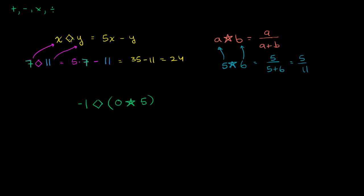We haven't defined whether diamond takes precedence over star or vice versa, the way we say you do multiplication before addition. We haven't defined it for those operations, but that's what the parentheses help us do. So we evaluate this parentheses first. 0 star 5, that is 0 over 0 plus 5, which is just 0. So this whole expression simplifies to negative 1 diamond 0.